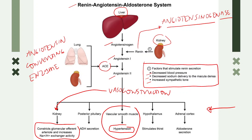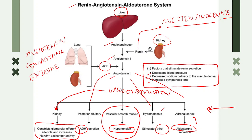The indirect actions of angiotensin 2 involve stimulating other hormones necessary for blood volume regulation: first, anti-diuretic hormone from the posterior pituitary; second, the thirst mechanism controlled by the hypothalamus; and lastly, aldosterone from the adrenal cortex — whose main role is sodium reabsorption. These are all the indirect effects of angiotensin 2 in calling other hormones for blood volume regulation.